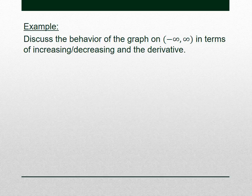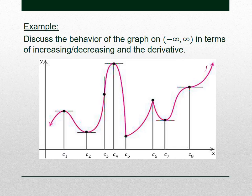Here I'm going to give you a graph and ask you to describe the behavior in terms of increasing or decreasing and the derivative. I'm going to break the graph up into pieces using x-values C1, C2, C3, up to C8. To the left of C1, the graph is going up — increasing — so the first derivative would be positive. I'll denote that with a plus to indicate what the first derivative is doing.